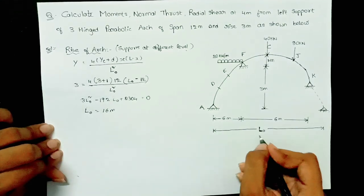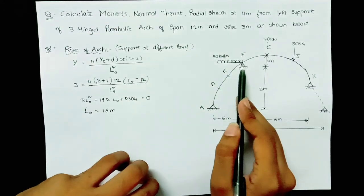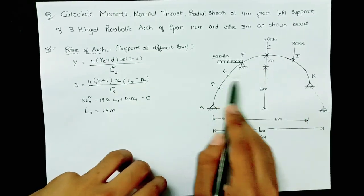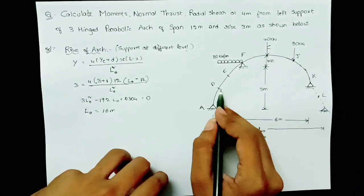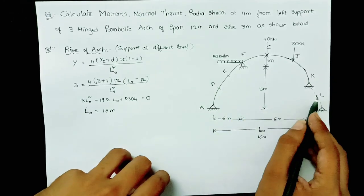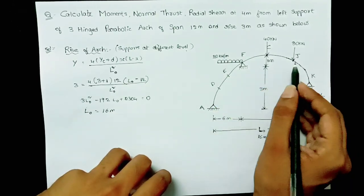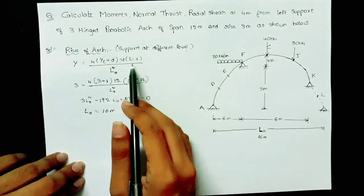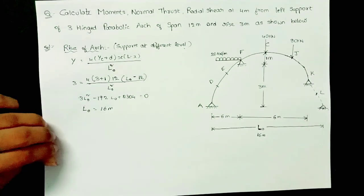Now that L₀ = 16 meters, we calculate the rise at each point. By symmetry, the rise at D equals the rise at L, rise at E equals rise at K, and rise at F equals rise at J. We substitute L₀ = 16 meters into the same formula for each point.